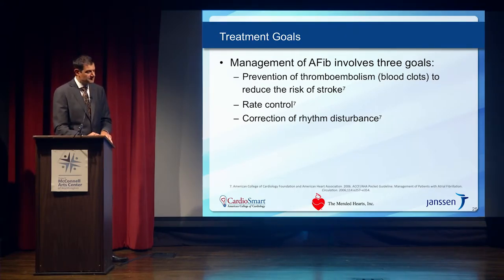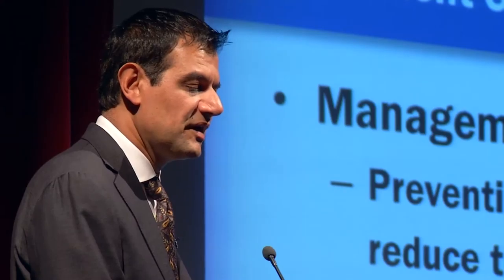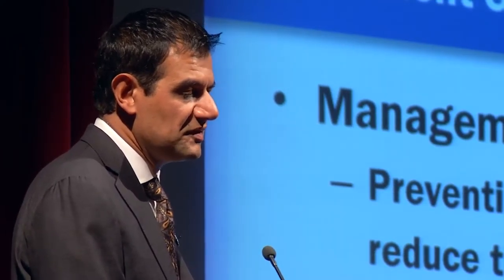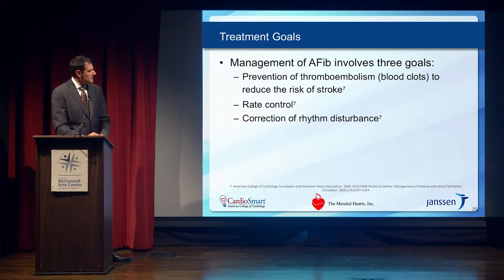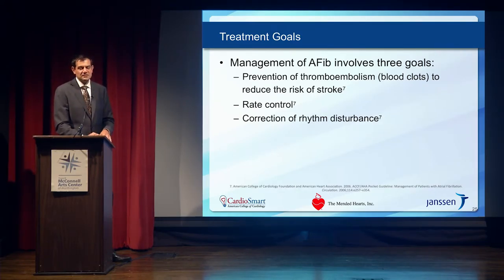The second important component is preventing complications like stroke, which is why we use blood thinners. The sooner you start blood thinners, the sooner you reduce the risk. The third goal of treatment is to get the heart rhythm back to normal — which we can do with medications or with procedures to resynchronize the heart back to normal rhythm. So when you're in the emergency room or at your doctor's office with this condition, they'll be thinking about all these different things as they recommend various treatments.